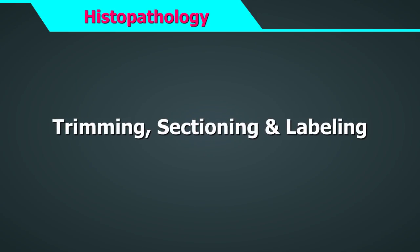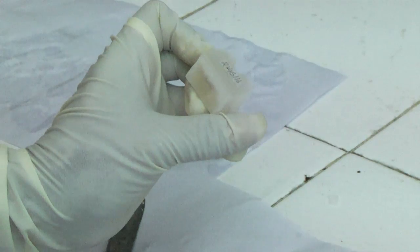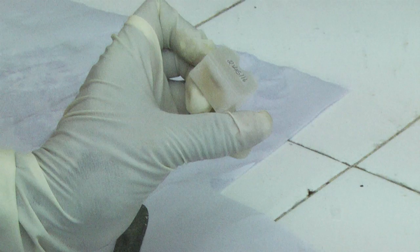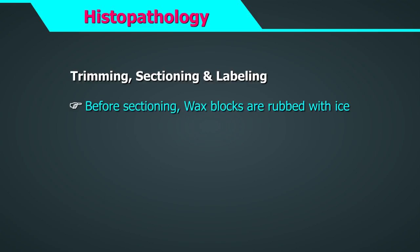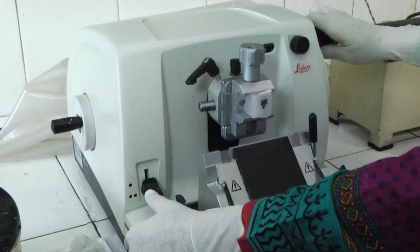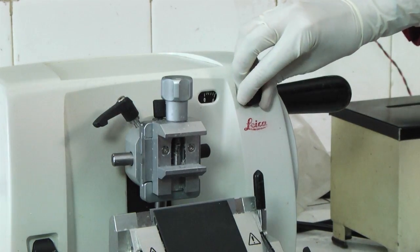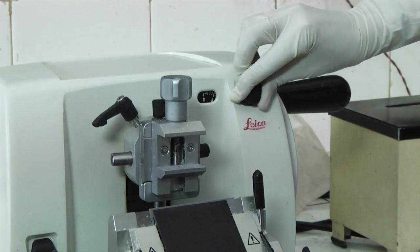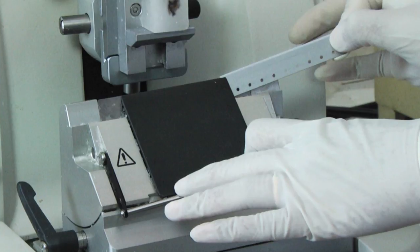Trimming is done to remove excess wax from the blocks until tissue is fully exposed. Boundaries are cut manually to decrease the size of the section. Before starting sectioning, the wax blocks with embedded tissue are rubbed with ice. The microtome is used to cut tissue sections 4–5 micrometres thick, one tissue block at a time. The microtome is essentially a knife with a mechanism for advancing a paraffin block standard distances across it. The setting of the microtome indicating tissue thickness should be checked before use. The important necessity for proper sectioning is to have a very sharp knife.